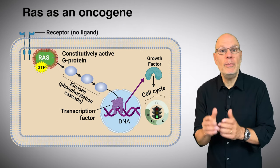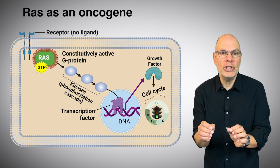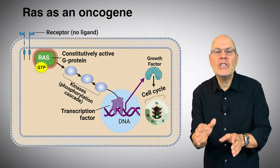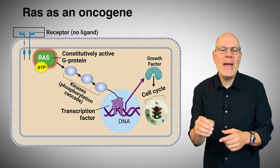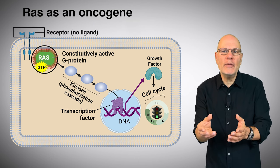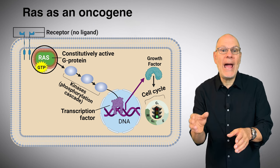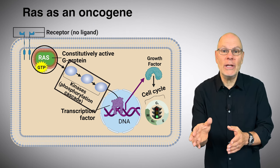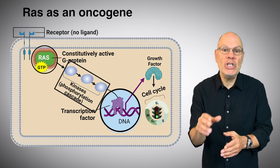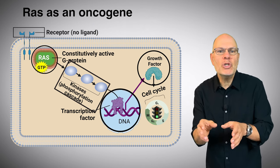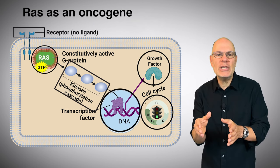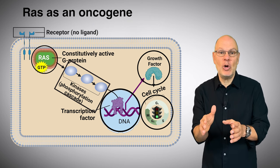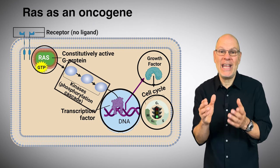When the RAS proto-oncogene mutates, it becomes an oncogene. The oncogene version of RAS is constitutively activated — that means it's activated all of the time. Even without a signal from outside of the cell, RAS activates the phosphorylation cascade and transcribes genes that produce a growth factor. The result is that the cell enters into the cell cycle when it shouldn't, and this kind of inappropriate cell division can lead to cancer.